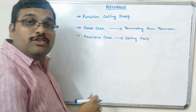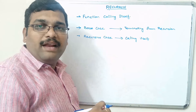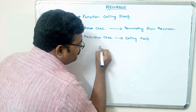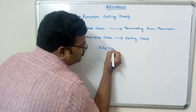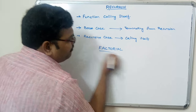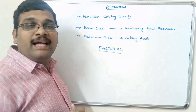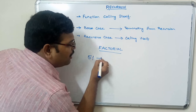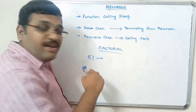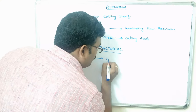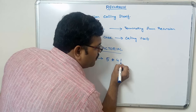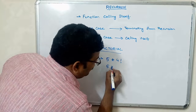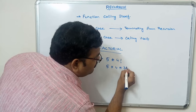If we write an example, you will get a clear understanding. The best example for recursion is factorial. Why is factorial an example for recursion? Let us take 5 factorial. We can write 5 factorial as 5 into 4 factorial. In the next step we can write it as 5 into 4 into 3 factorial.